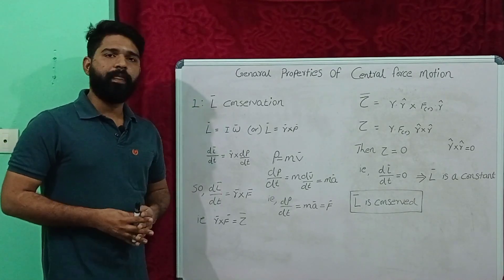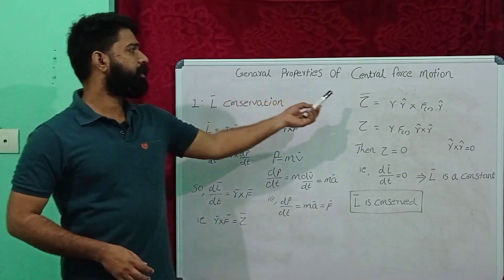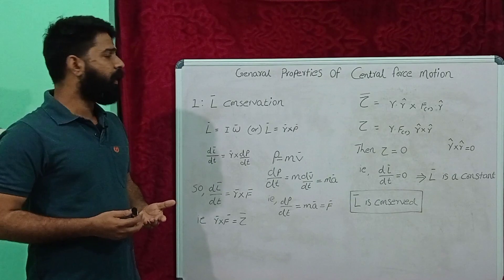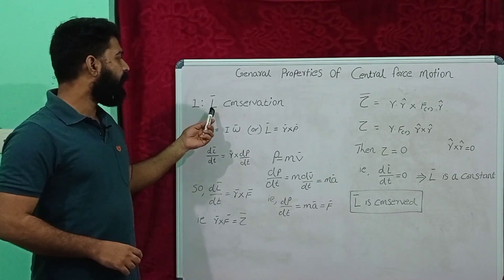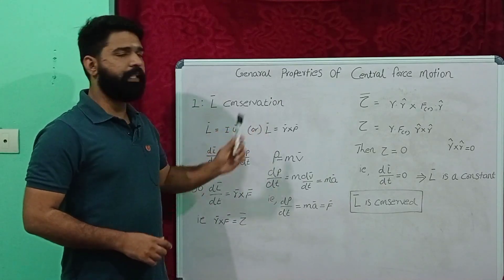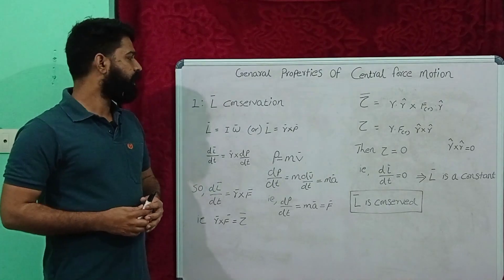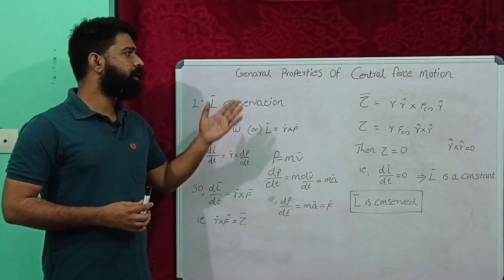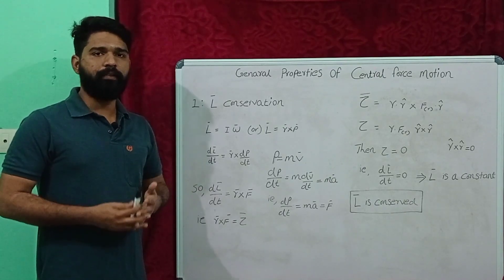Today we are going to discuss the general properties of central force motion. The first property is angular momentum conservation. In the case of central force motion, the angular momentum of the object is conserved.